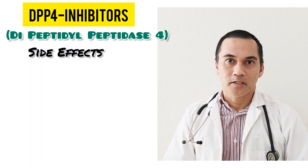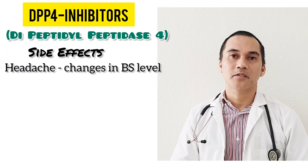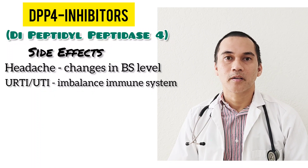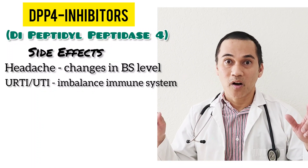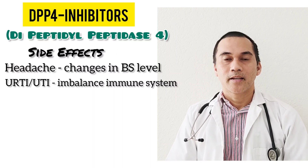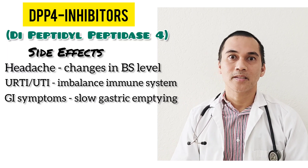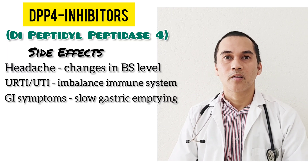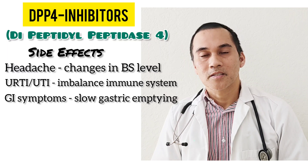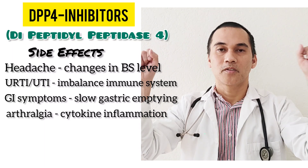What are the side effects of this medication? You have headache due to changes in blood sugar level. It can also cause upper respiratory tract infections and UTI, because this medication can cause a slight imbalance of the immune system. You also have GI symptoms because, as noted, GLP-1 slows gastric emptying. It was also reported that this medication can cause arthralgia, or stiffness of the joints.